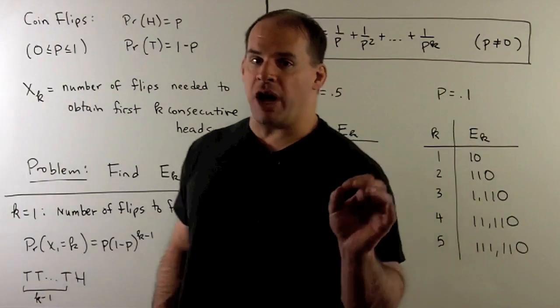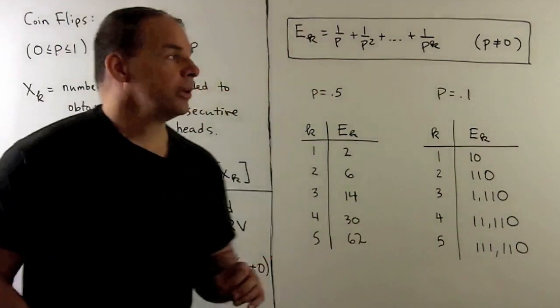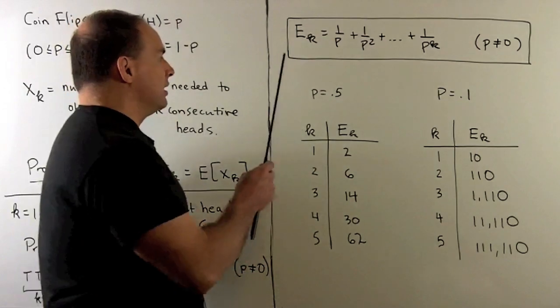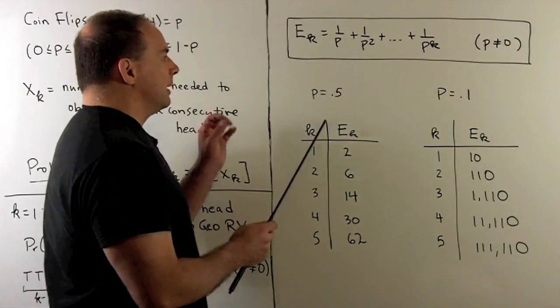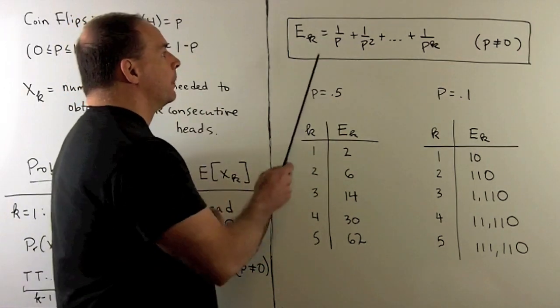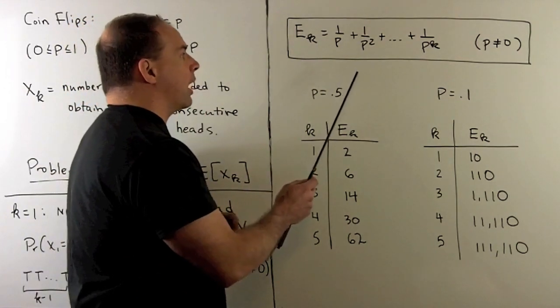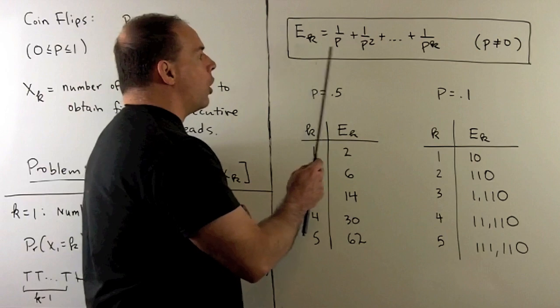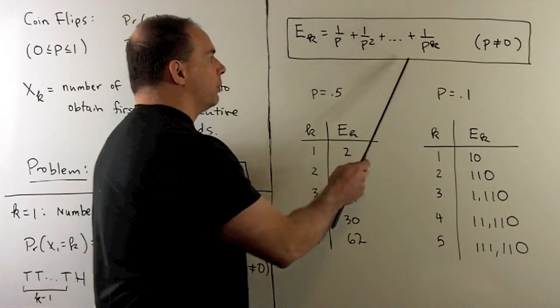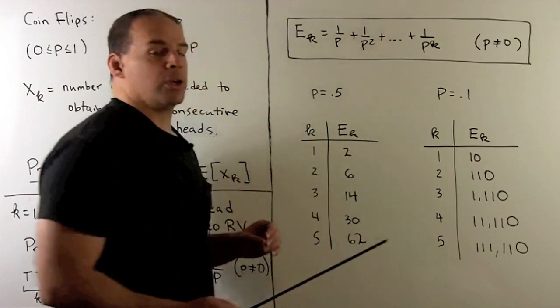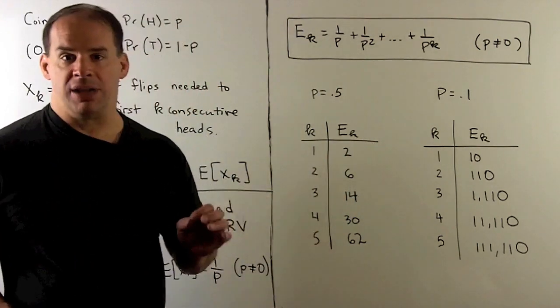For our formula in general, e sub k is going to be given by 1/p plus 1/p² all the way up through 1/p^k, assuming p is non-zero.